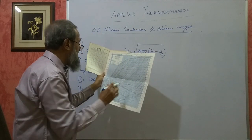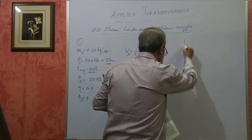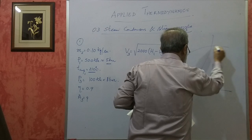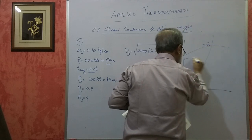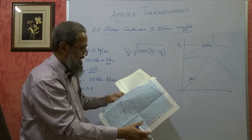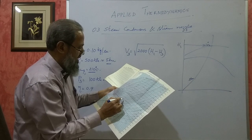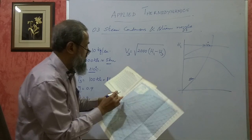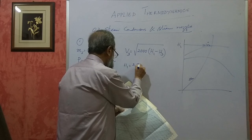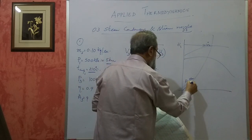At 5 bar and 210 degree centigrade on the Mollier chart, the enthalpy H1 is somewhere around 2800 to 2900 kJ/kg. I will take H1 as approximately 2850 kJ/kg. You mark the 5 bar pressure line and the temperature line on the chart — this intersection gives H1. This is P1 and T1 marked on the chart.